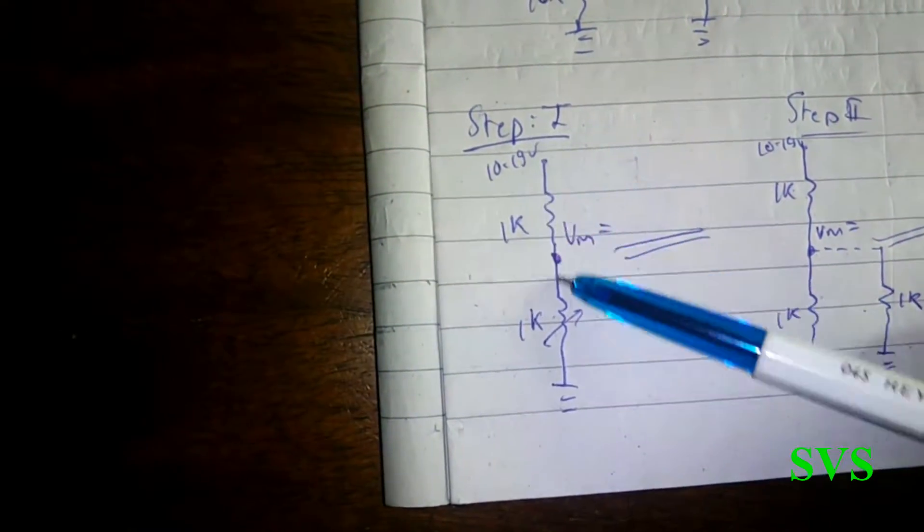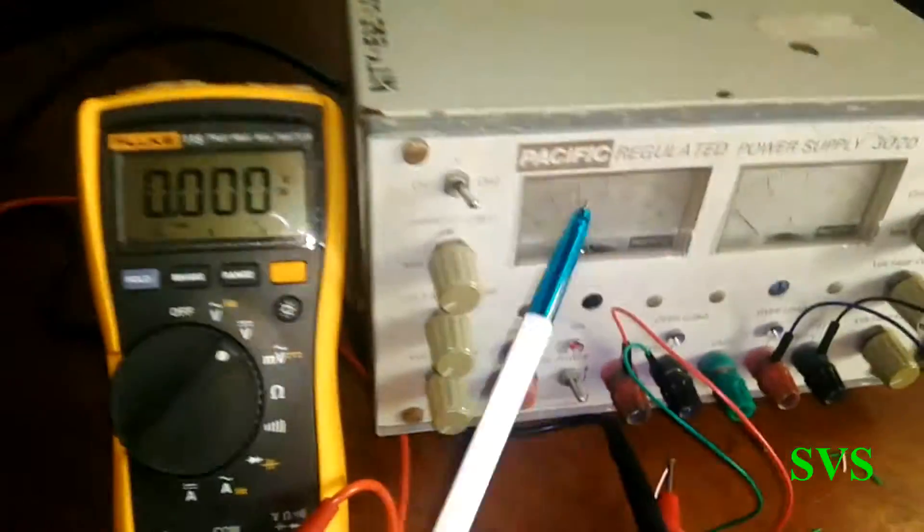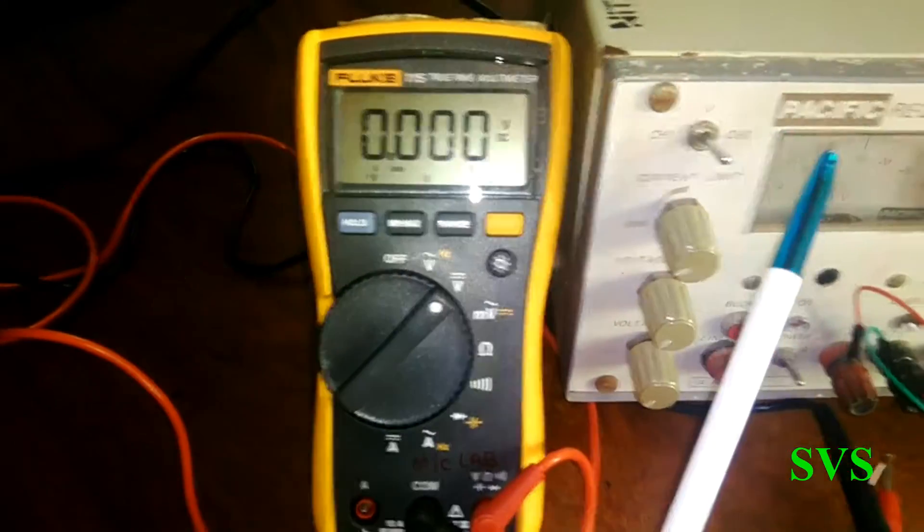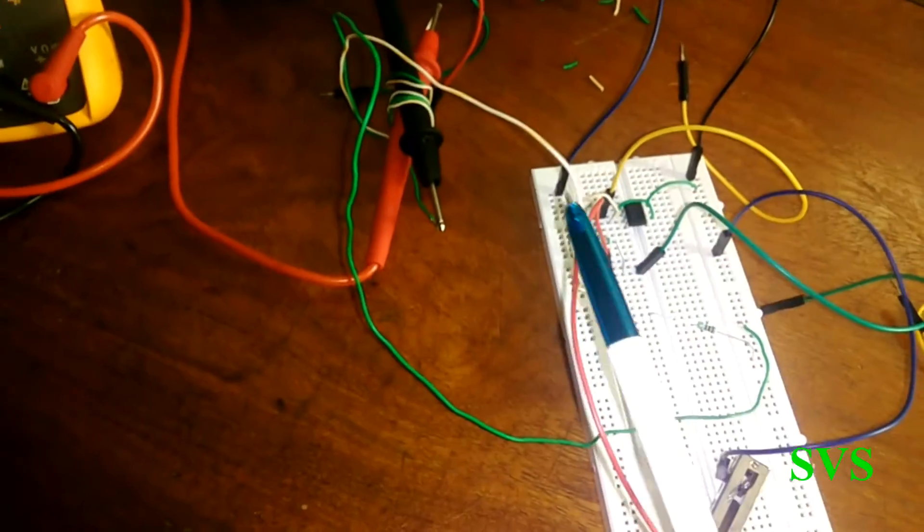So let's measure what we have with this configuration. Here we have the practical circuit. The supply here is around 10 volts, and this is the reading of the points which we can see as the green and white wire.